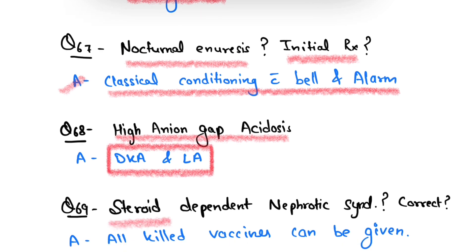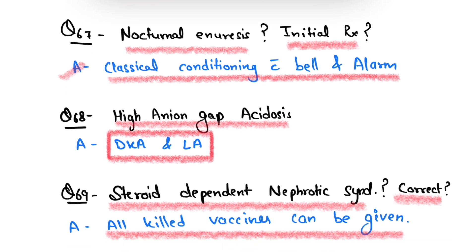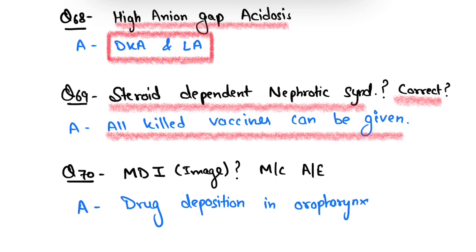Question number 69: steroid dependent nephrotic syndrome, which one is correct? We can give all killed vaccines in these types of patients because the patients are immunocompromised. Question number 70.